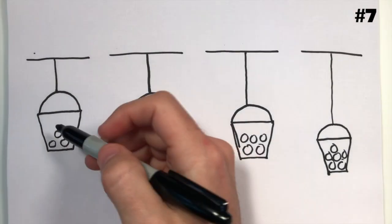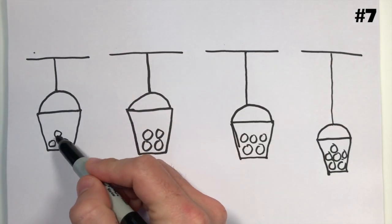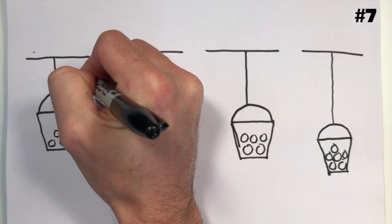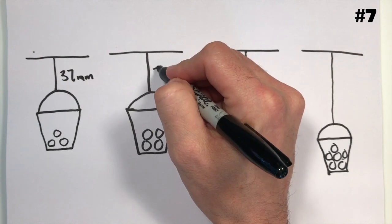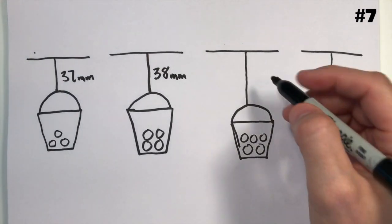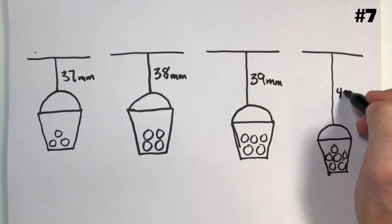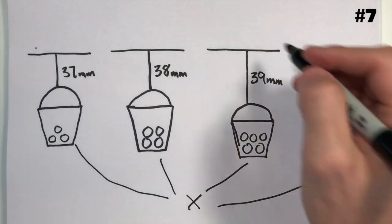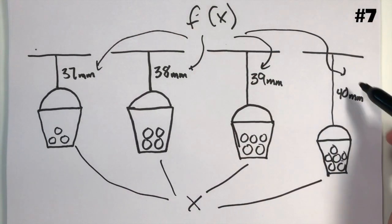We've got a bucket hanging from an elastic rubber-band type of thing. When the bucket has three golf balls in it, the length of the elastic is 37 millimeters. If we add another golf ball — four golf balls total — the elastic moves to 38 millimeters because of the extra weight. Add another golf ball to make five, and we've got 39 millimeters. Go up to six golf balls and that elastic string goes to 40 millimeters. If x is the number of golf balls and f of x is the length of the elastic.